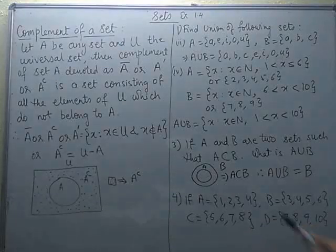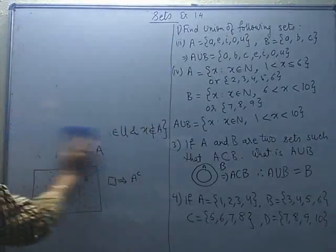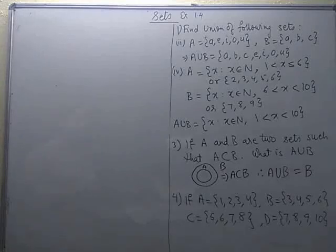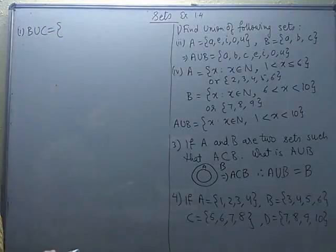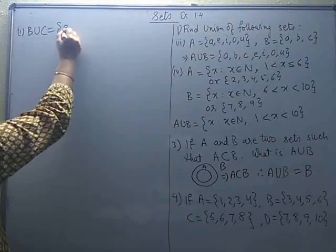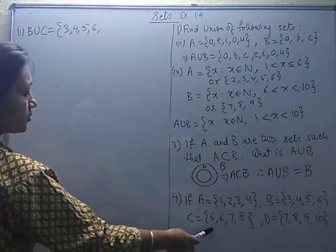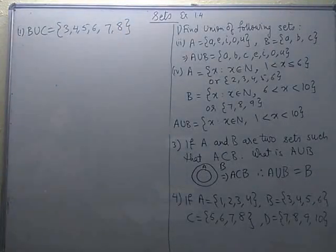Moving on to question number 4, you can see I have written 4 sets. Using these sets we will define some operations between them. Say we have to find B union C. B union C means all the elements of B as well as all the elements of C. From B we have 3, 4, 5, 6. Then moving to C, 5 and 6 are already written so we move to the next elements. So B union C becomes 3, 4, 5, 6, 7, 8.